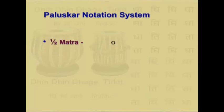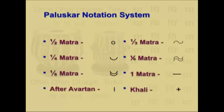In the Paluskar system, if there is a varna with a value of one half beat, you use a circle symbol around it. For one fourth or one eighth, there are different symbols which you will see on the screen. The Paluskar system gives you specific symbols for one half, one fourth, one third, and one sixth beats, and you use them accordingly.